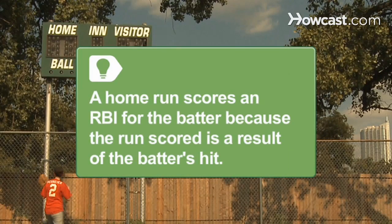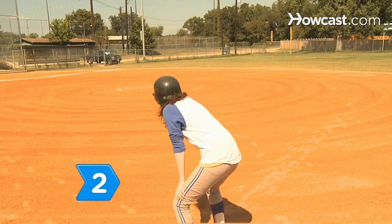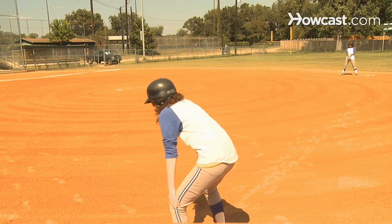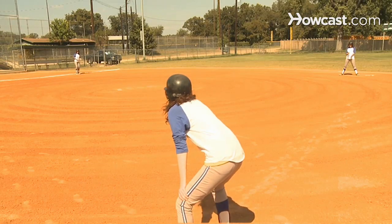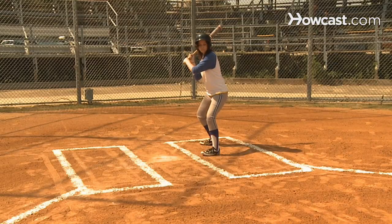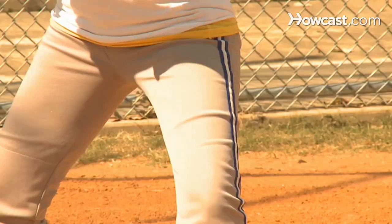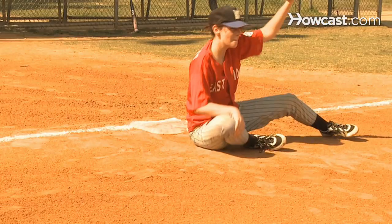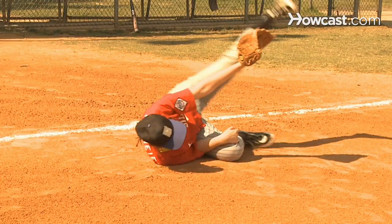A home run scores an RBI for the batter because the run scored is a result of the batter's hit. Step 2. Score an RBI for the batter when the bases are full and the batter is awarded first base because of a base on balls, because they are hit by a pitch, or because of interference or obstruction.